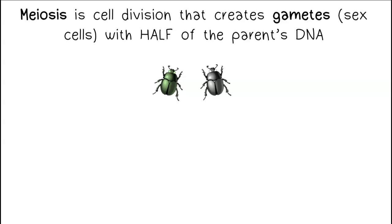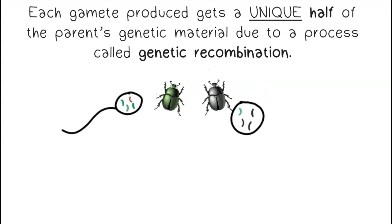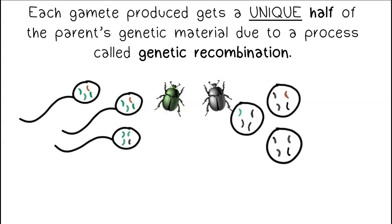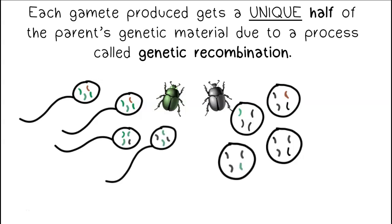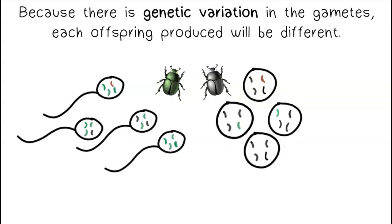Meiosis is cell division that creates gametes, or sex cells, with half of the parent's DNA. Each gamete produced gets a unique half of the parent's genetic material due to a process called genetic recombination. Every gamete that's produced is different. Because there is genetic variation in the gametes, each offspring produced will be different.